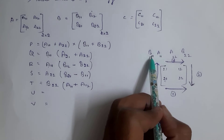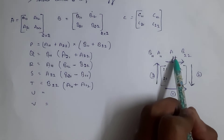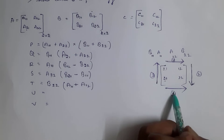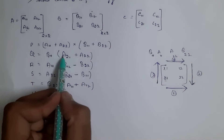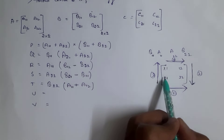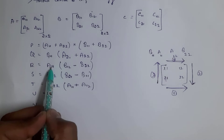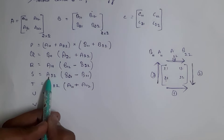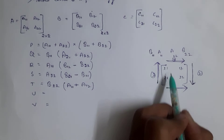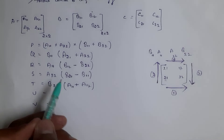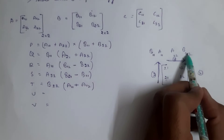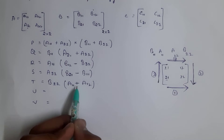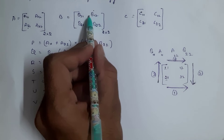To recap using the b-a-a-b mnemonic: b11, a11, a22, b22 are the reference points. Q = (a21 + a22) × b11. R = a11 × (b12 − b22). S = a22 × (b21 − b11). T = (a11 + a12) × b22. These are the formulas for Q, R, S, and T.